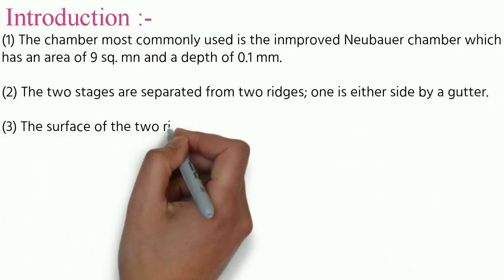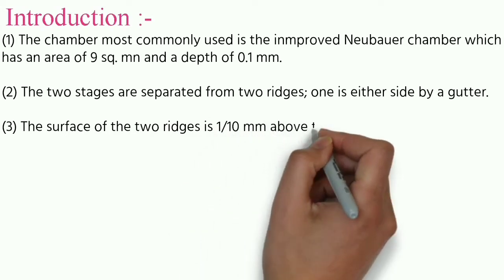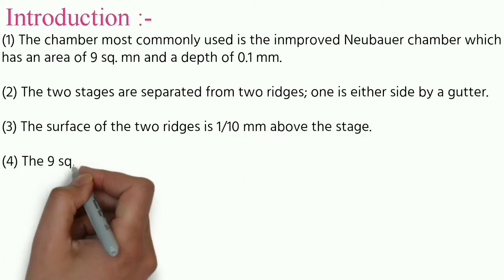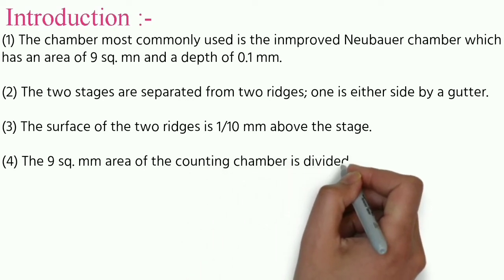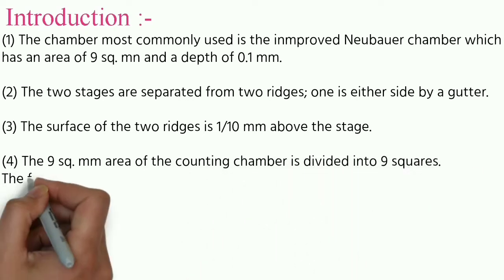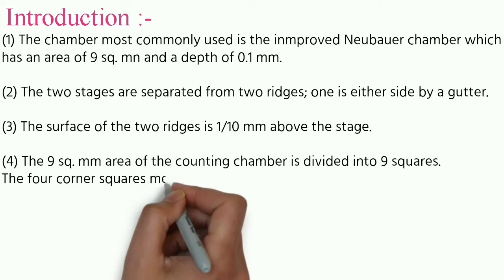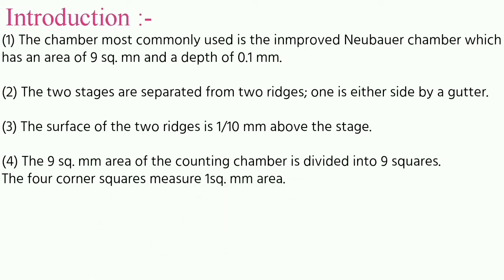The surface of the two ridges is 1/10 mm above the stage. The 9 square mm area of the counting chamber is divided into 9 squares. The 4 corner squares each measure 1 square mm area.